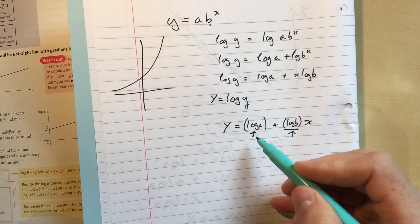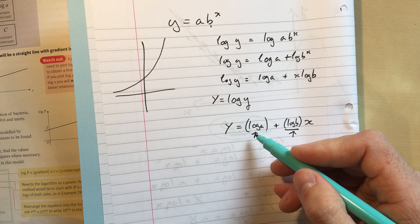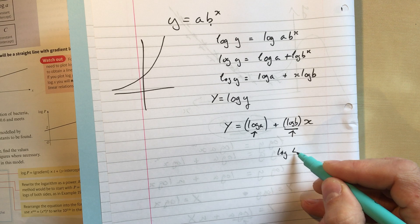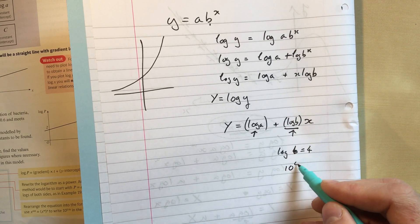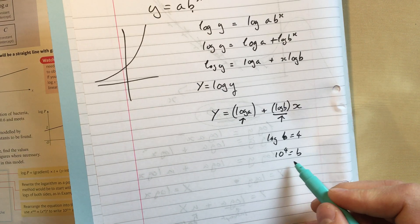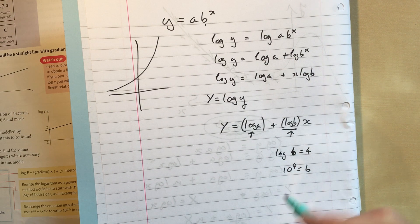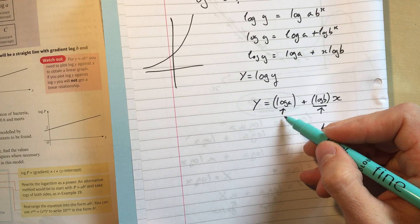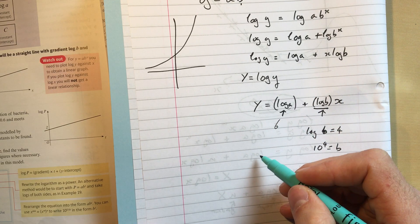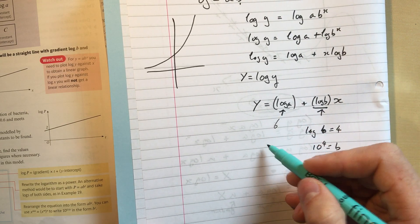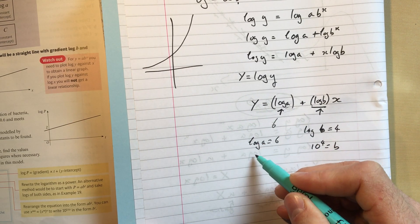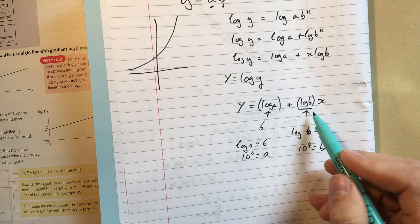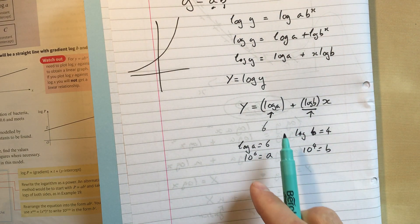And then that would mean that y equals a times 4 to the power of x, for example. If I look at the y intercept of that straight line, then that is log of a. If the y intercept is 6, sorry, if log of b is 4, let's just check if I've got this, let me just make sure I'm saying this correctly, then that would be 10 to the power of 4 equals b. So b would be 10,000. I think I said before that b would be 4, so if the gradient is 4, then we work out b, and it's not the same as the gradient, but we can work it out from the gradient. If the y-axis intercept is 6, then log a equals 6, so 10 to the power of 6 equals a. So we can find a and we can find b if we know the gradient and the y-axis intercept of our straight line.